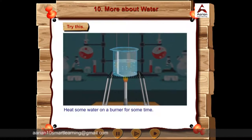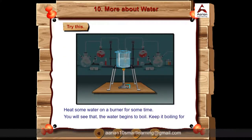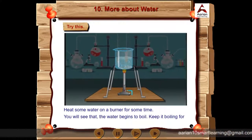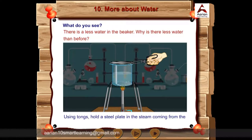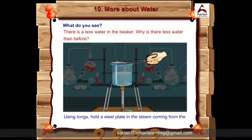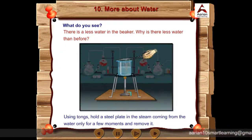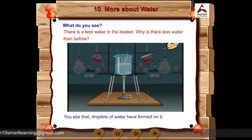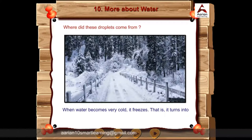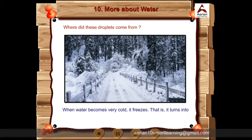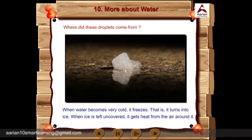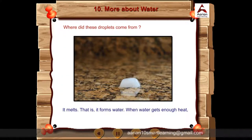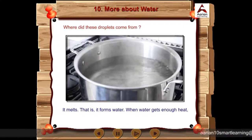Heat some water on a burner for some time. You will see that the water begins to boil. Keep it boiling for some time and observe it. Using tongs, hold a steel plate in the steam coming from the water only for a few moments and remove it. You see that droplets of water have formed on it. When water becomes very cold, it freezes. That is, it turns into ice. When ice is left uncovered, it gets heat from the air around it. It melts. That is, it forms water. When water gets enough heat, it turns into vapour.